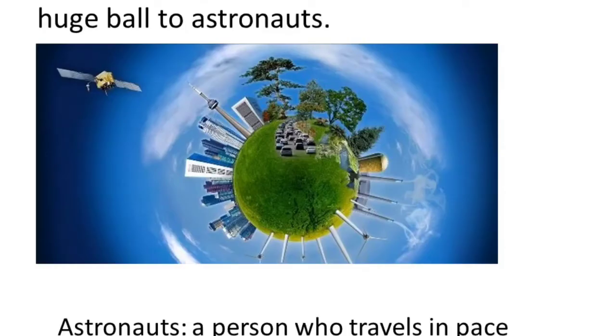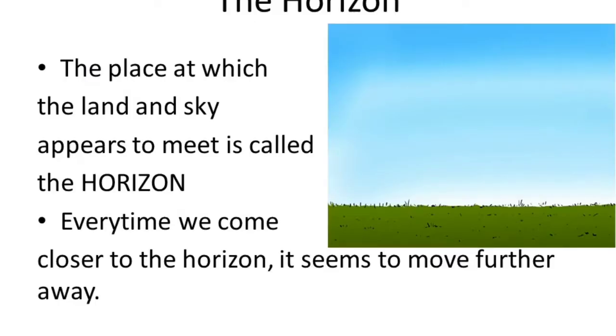From outer space too, earth looked like a huge ball to astronauts. Now, what are astronauts? Astronauts are those people who travels in space in a spacecraft. The horizon. Now, kids, what is a horizon? The place at which land and sky appears to meet is called the horizon. It's not the place where they actually meet. We feel that they appear to meet. Now, every time we come closer to the horizon, it seems to move further away because it is the point where it is only appearing to meet.